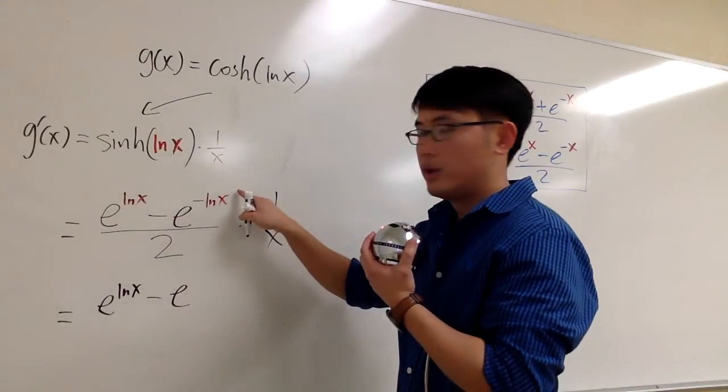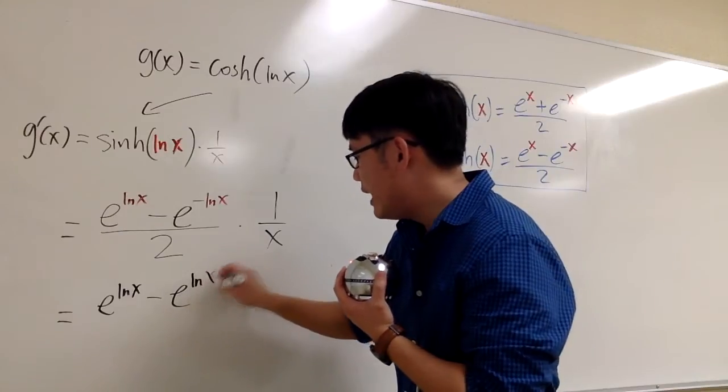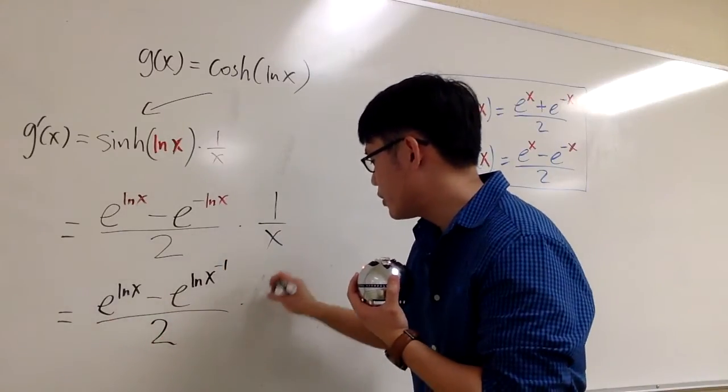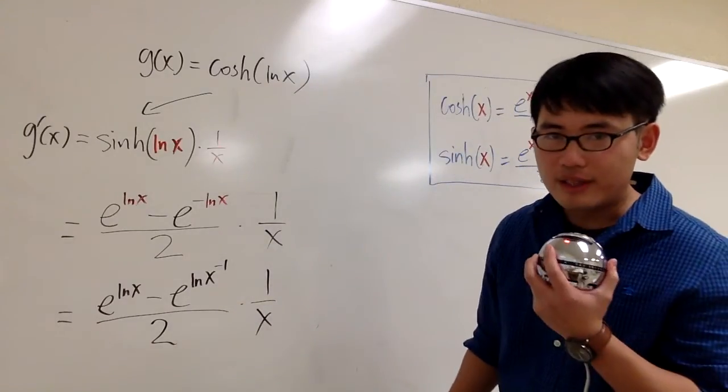e to the ln x minus e to the, bring this to the top. We have ln x to the negative 1 over 2, and then we multiply by 1 over x. Now I can cancel things out.